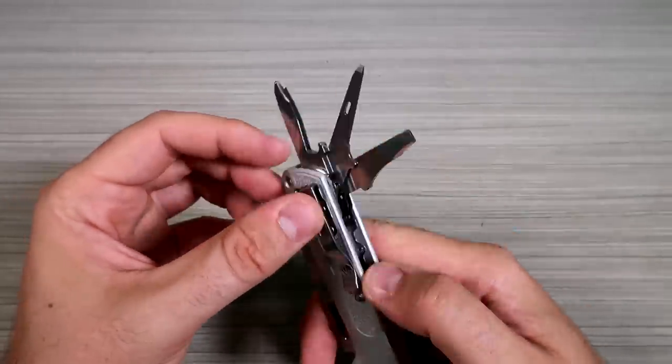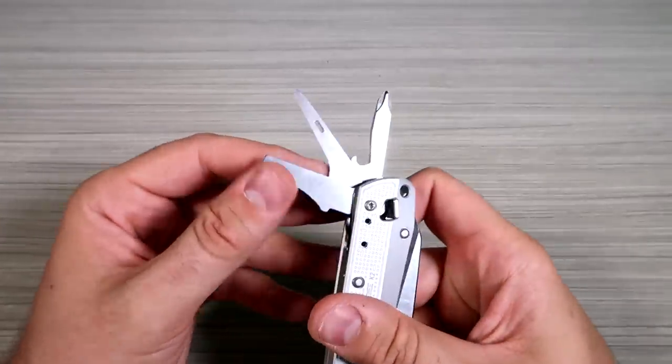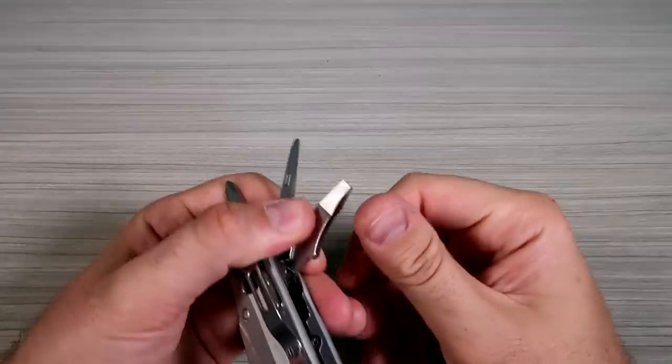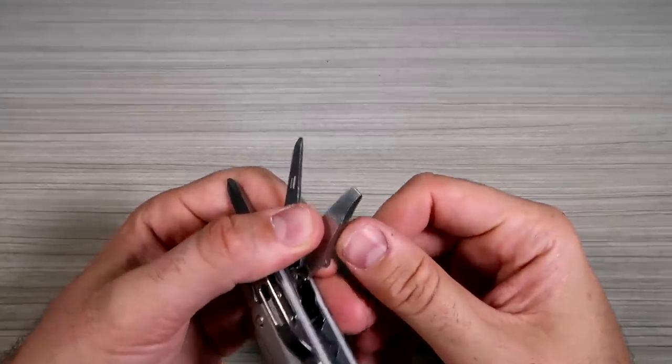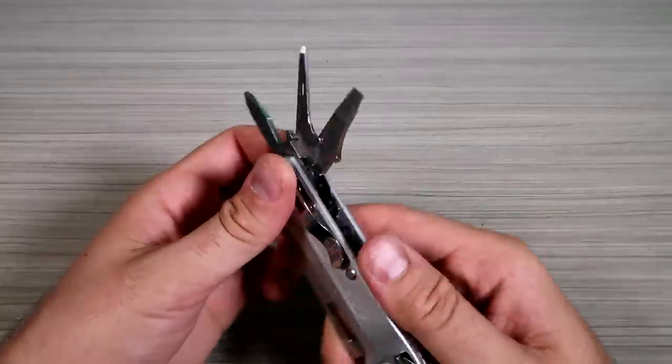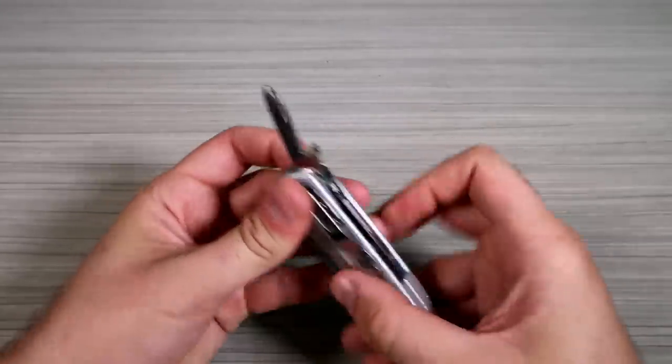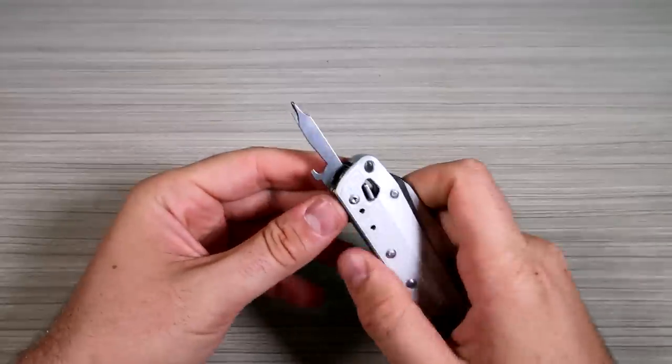So what we got in this one? Screwdriver, bottle opener, another smaller flathead screwdriver. What is this? Feels like a little sharp over here, a little thicker screwdriver.